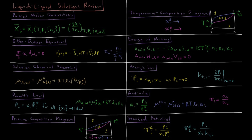Henry's law gives an alternate expression for vapor pressure rather than Raoult's law. It states that the vapor pressure of a component in a solution equals a Henry's law constant times its mole fraction, in the limit as the mole fraction of that substance approaches zero. The Henry's law constant can be determined empirically by measuring the partial derivative of vapor pressure with respect to mole fraction evaluated as the mole fraction approaches zero.